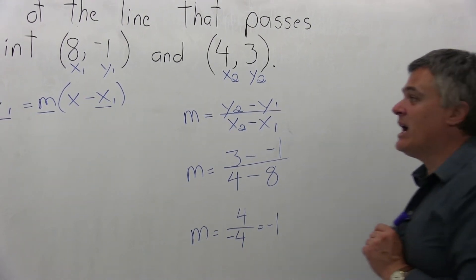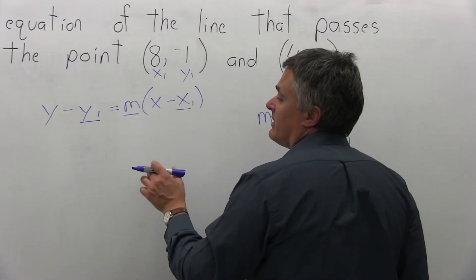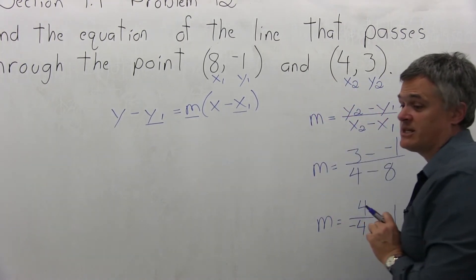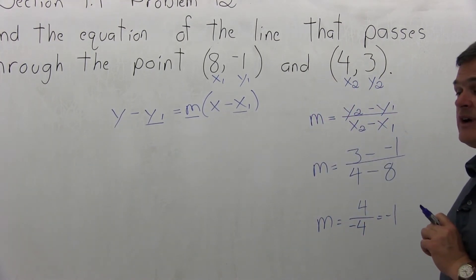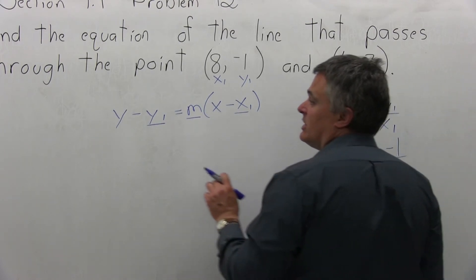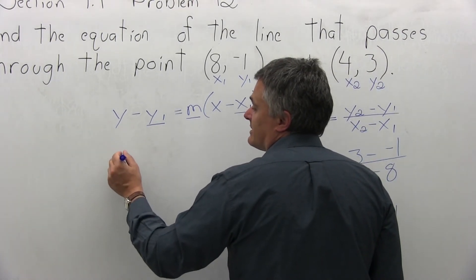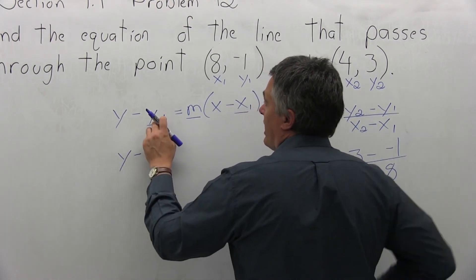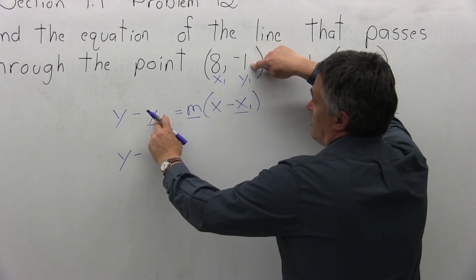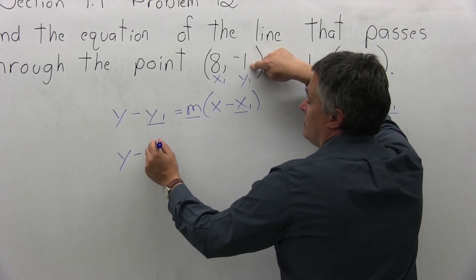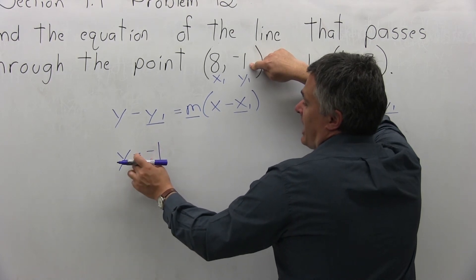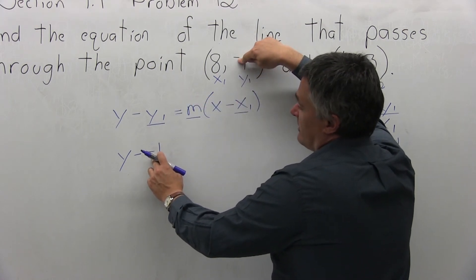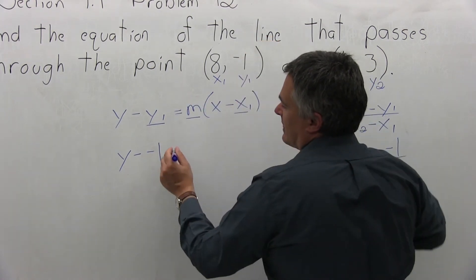Now that I have a value for m, I can go back to my formula for the equation of a line, y minus y1 equals m times x minus x1. And now I can plug in all the values that need to be plugged in. So the first piece, y, stays in the answer. Next is minus. That'll stay. y1 has a value of negative 1. Now again, I'm going to have two negatives, I have y minus negative 1. The first negative is from the formula, the second negative from the fact that the given point is negative.